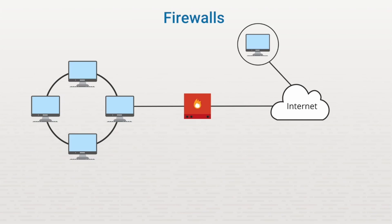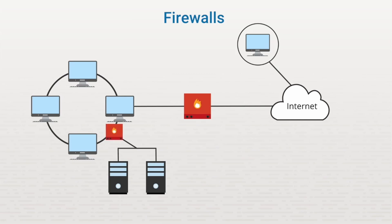In addition to protecting an entire network from attackers on the internet, you can also use firewalls to isolate and protect sensitive segments of your private network. For example, let's suppose we want to protect the servers that hold sensitive accounting data. We could create a special subnet for those servers and then install a firewall to protect that segment from unauthorized traffic originating from within our own private network or any traffic out on the internet. In order to do this, we define a set of rules on the firewall to specify that only very specific types of traffic are allowed through.